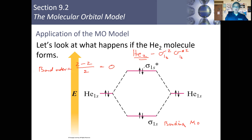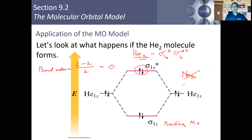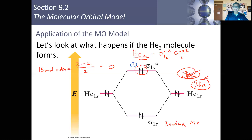A bond order of 0 is not favorable for the formation of He2, and having 2 electrons in the anti-bonding state is also not favorable. Diatomic helium does not exist, which makes sense given what we know about noble gases — they tend to exist in the monatomic state rather than the diatomic state. This confirms that diatomic helium cannot and will not exist for two reasons: two electrons in the anti-bonding orbital, and a bond order of 0.